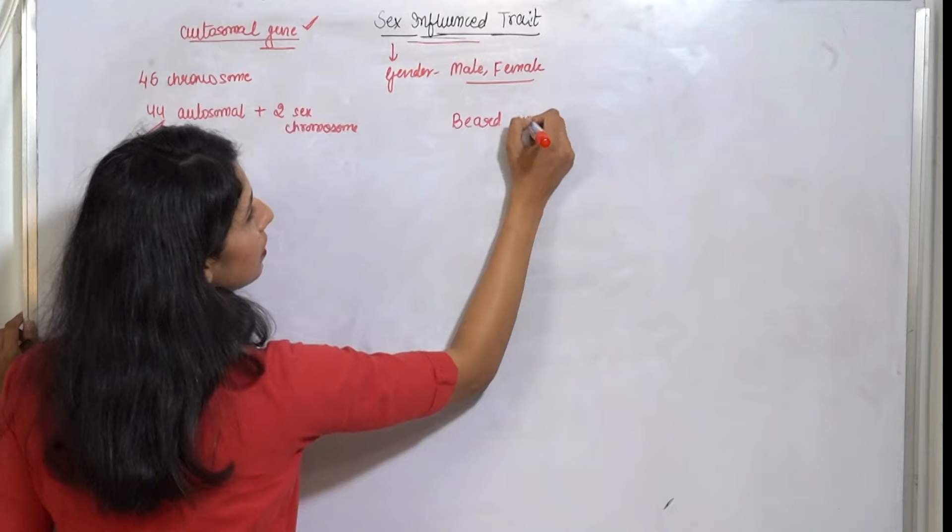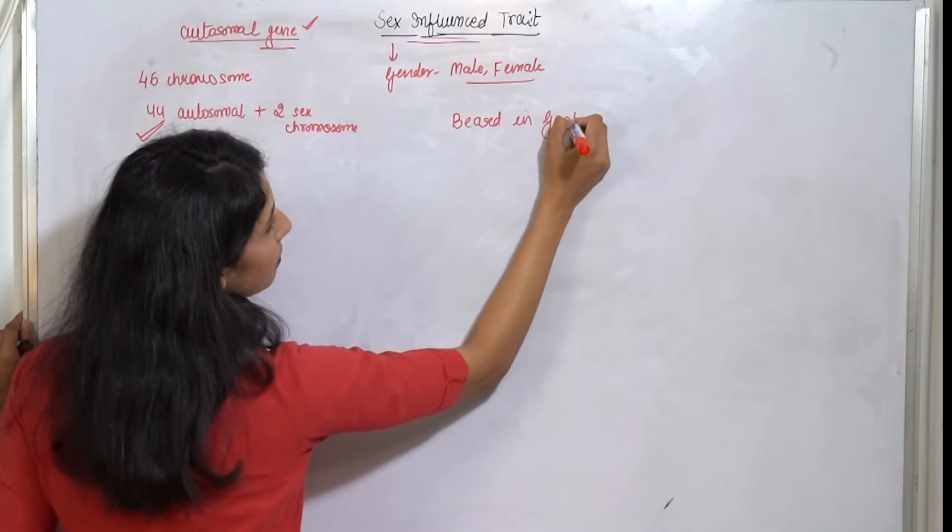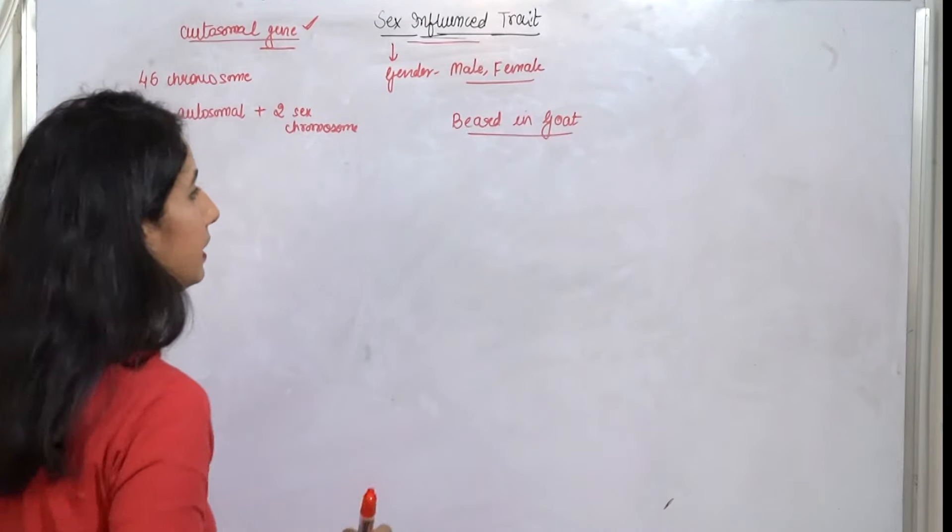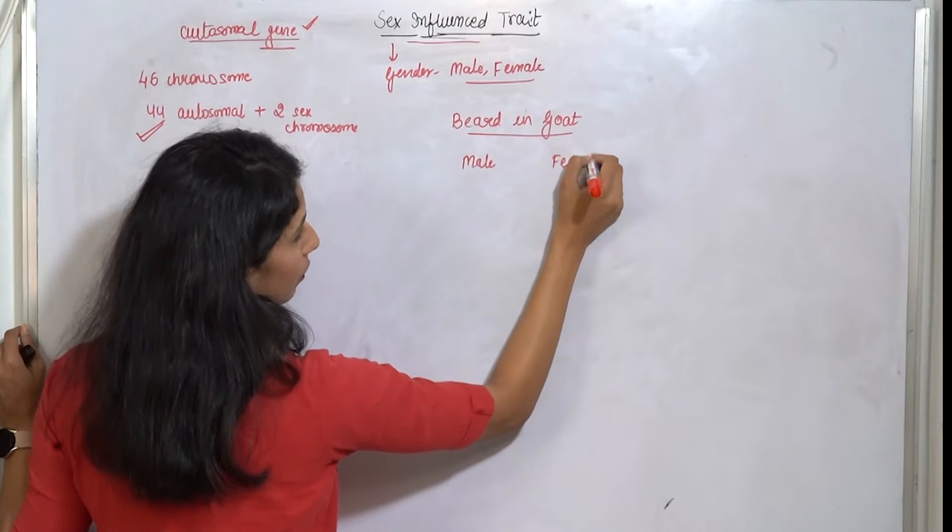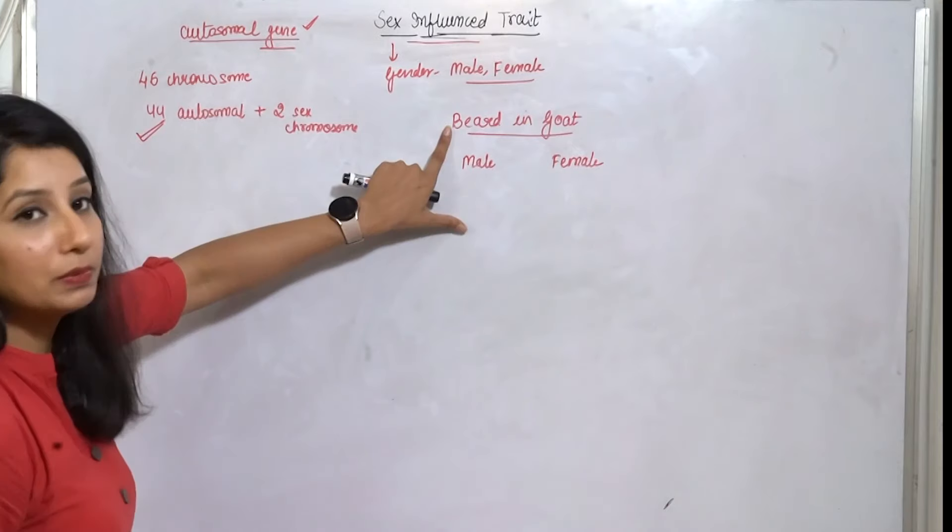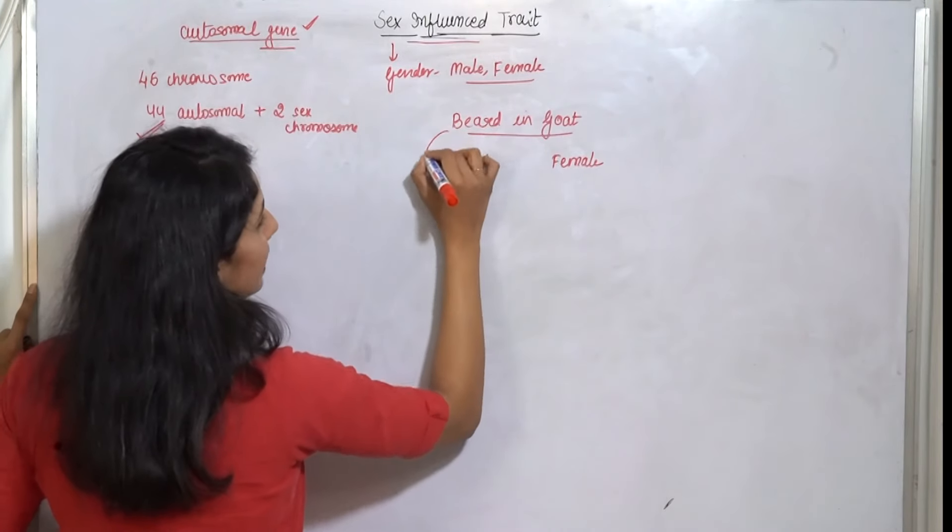This can be understood as an example. Like, I can take an example: beard in goats. We can take an example here. So here, goats will be male and female.